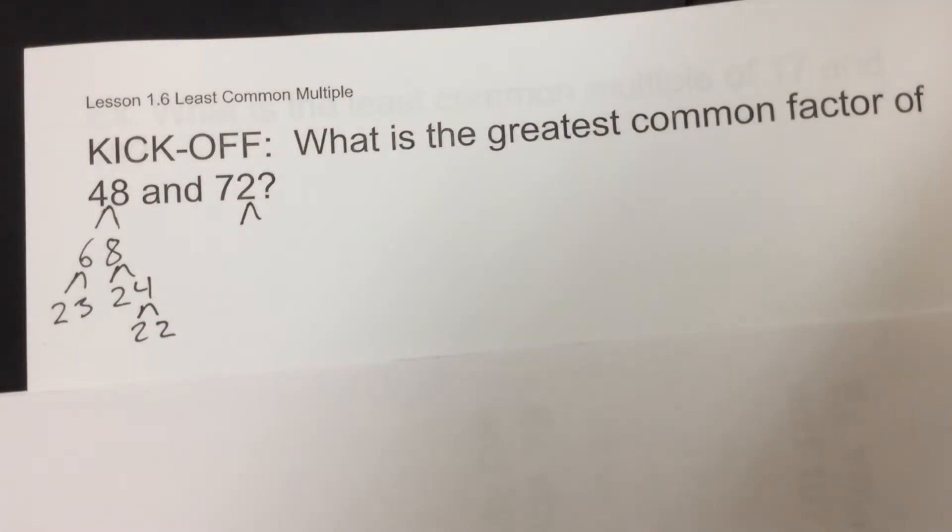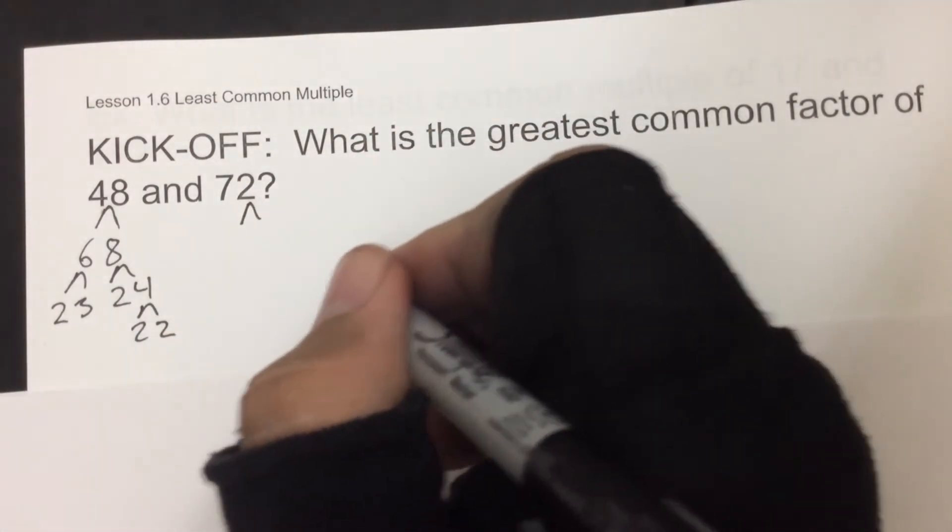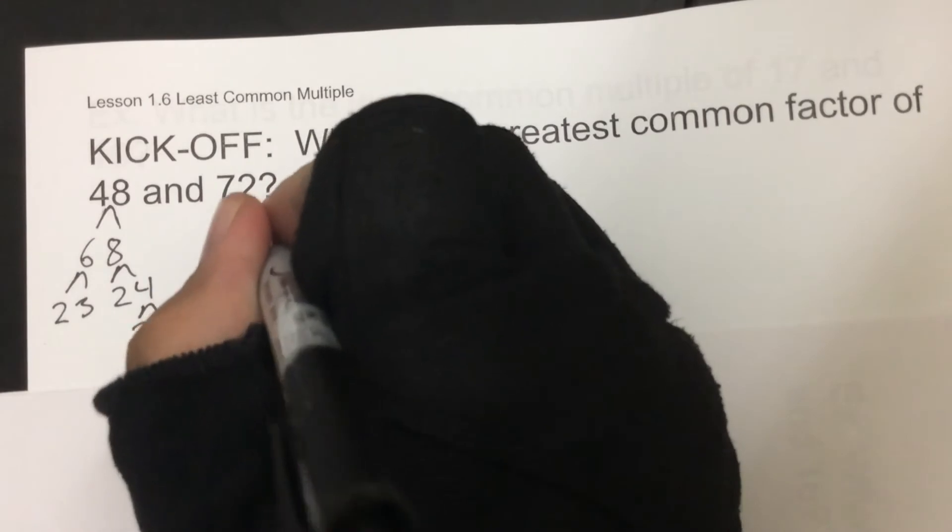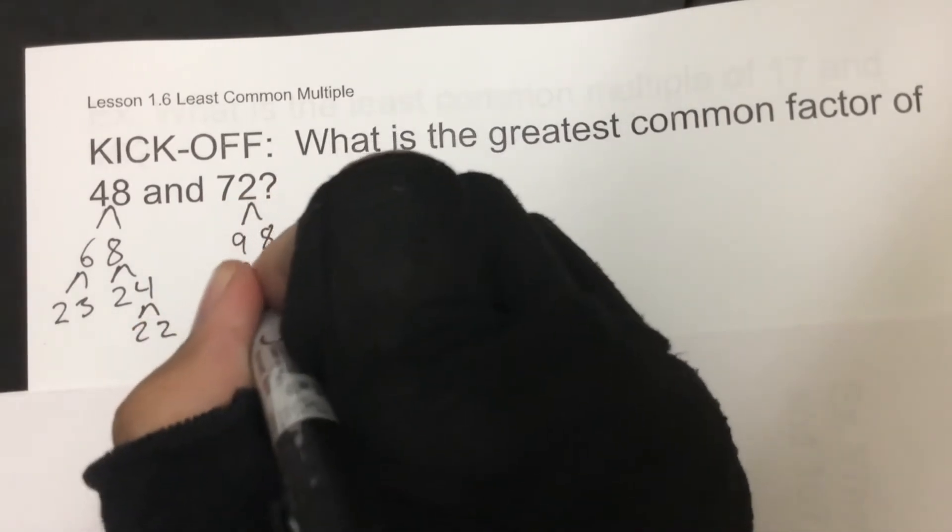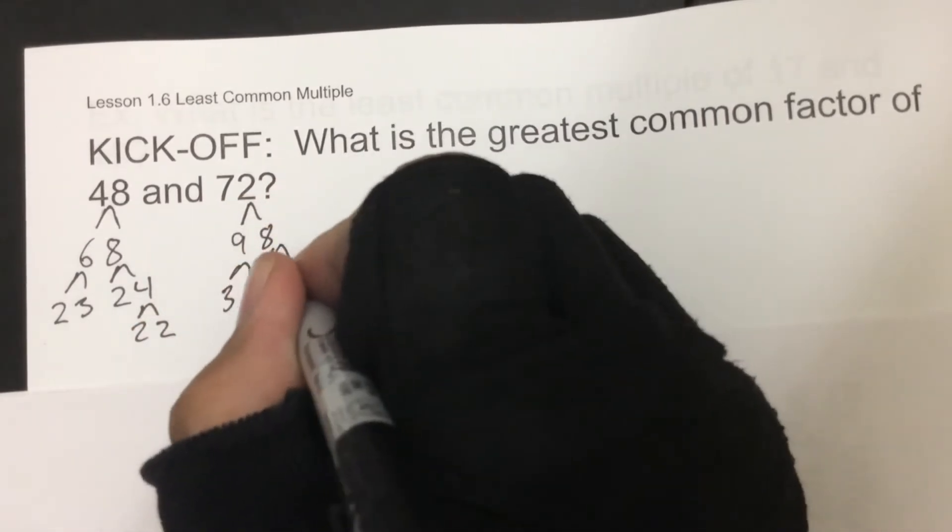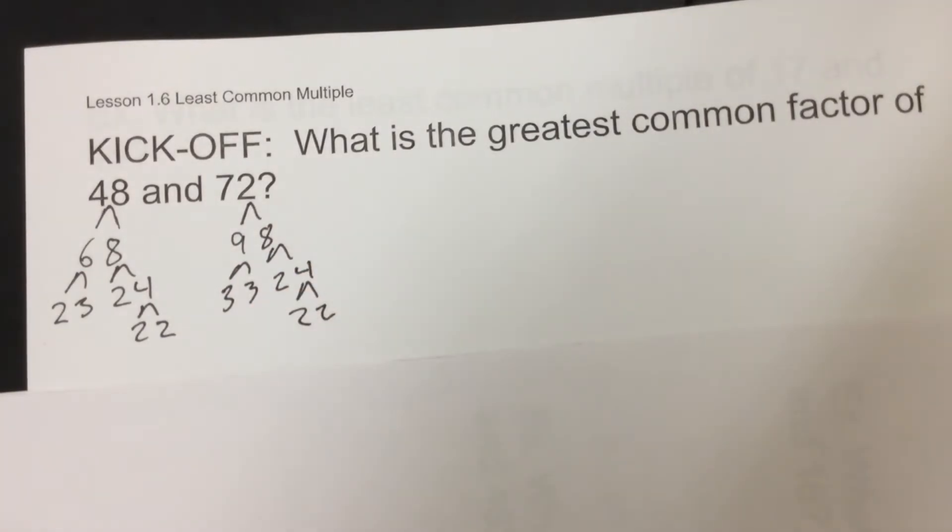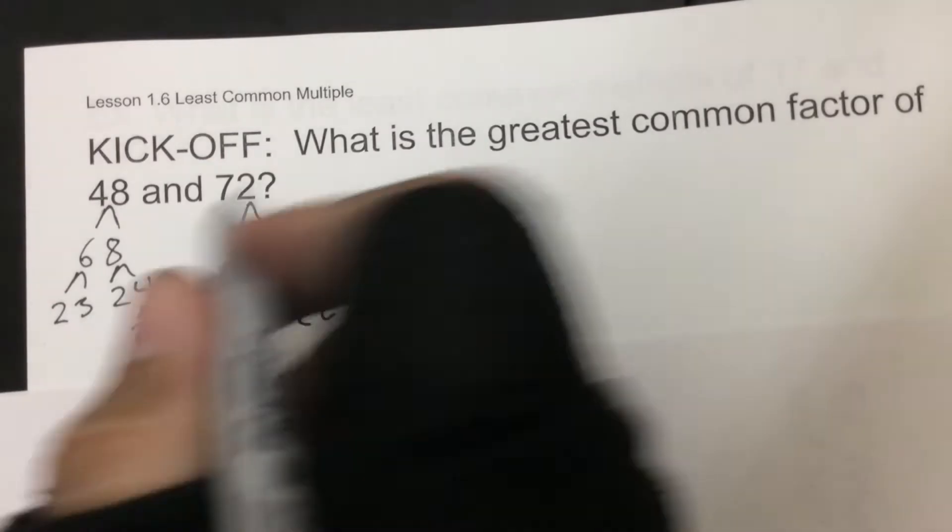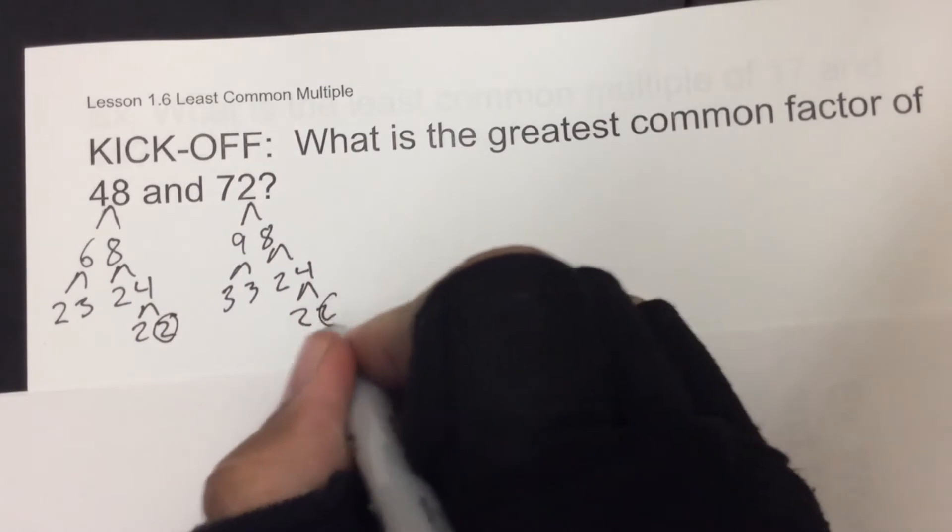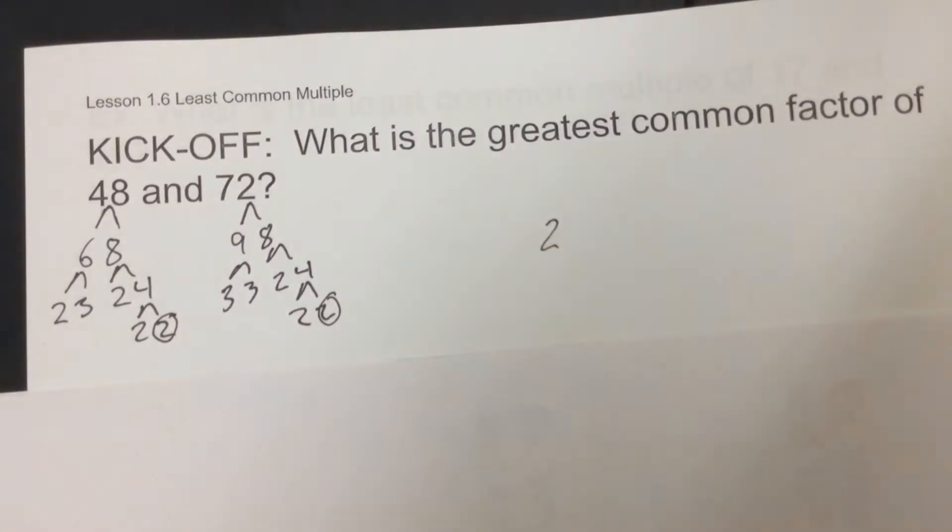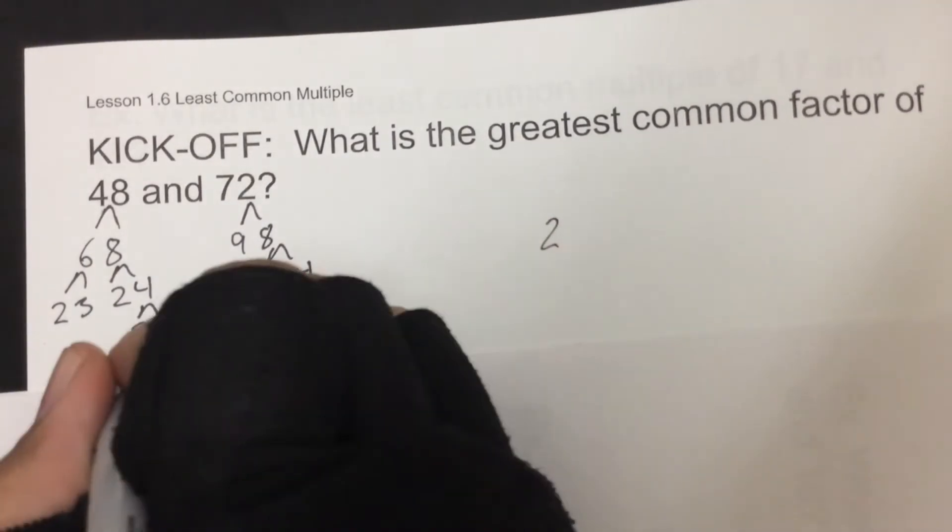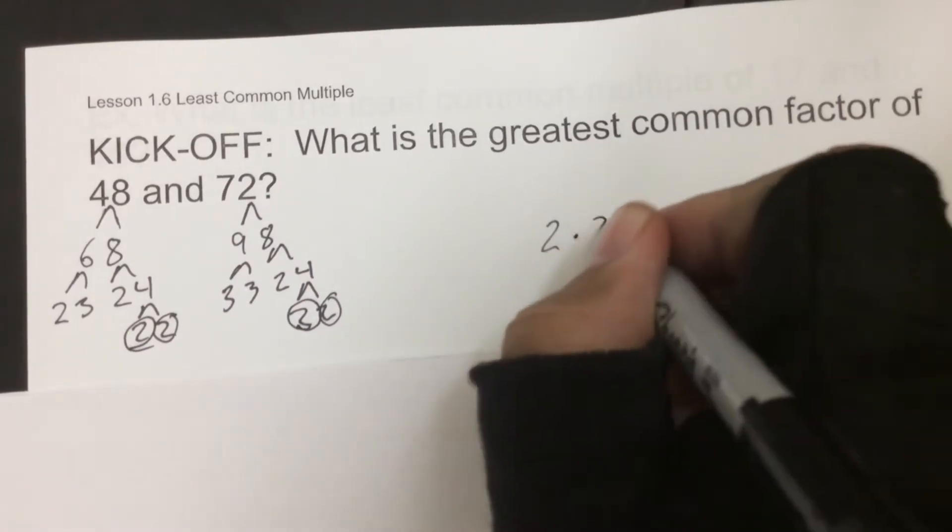72 breaks up to be 9 and 8, so 3 and 3, 2 and 4, which goes to 2 and 2. So when we're doing greatest common factor, we're looking for what factors do they have in common. So they have a set of 2's, so we write a 2 down. Second set of 2's, so times by 2.